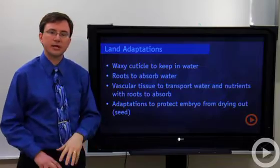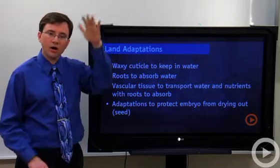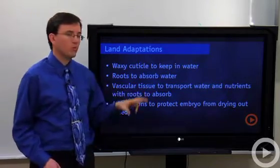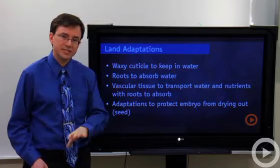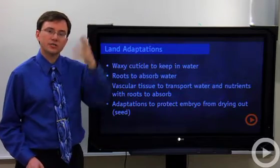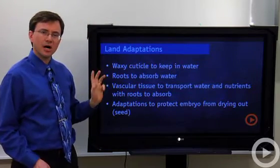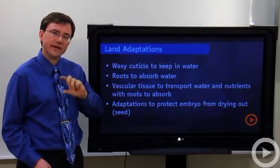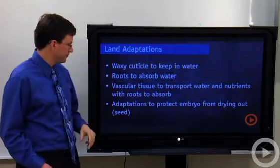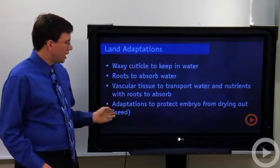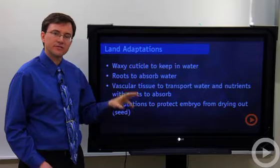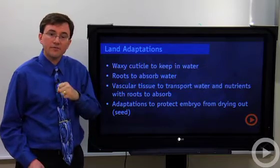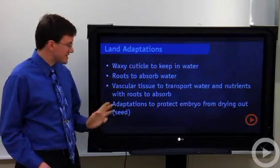Vascular tissue is something that many of the taller plants have that allows them to transport water and nutrients from deep in the soil to the top of the plant. The mosses, which are typically much shorter, don't have that vascular tissue. Another adaptation plants have is special structures to keep their offspring — their embryos — from drying out. The seed plants are the best example of this.